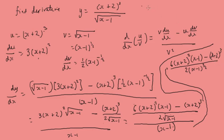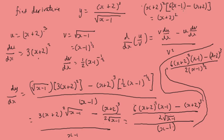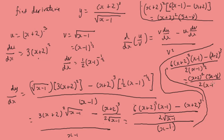We can take x plus 2 squared out, leaving 6 times x minus 1 minus x plus 2. Opening the brackets and simplifying this gives us 5x minus 8. So the final answer is x plus 2 squared times 5x minus 8, all over 2 times x minus 1 to the three over two.